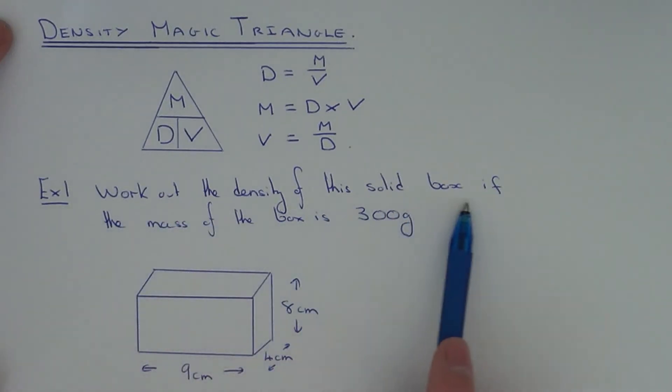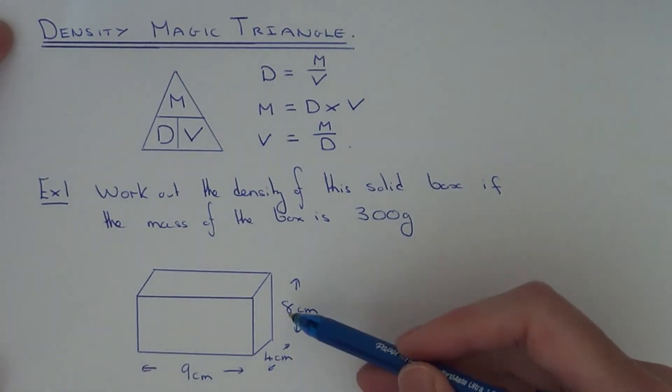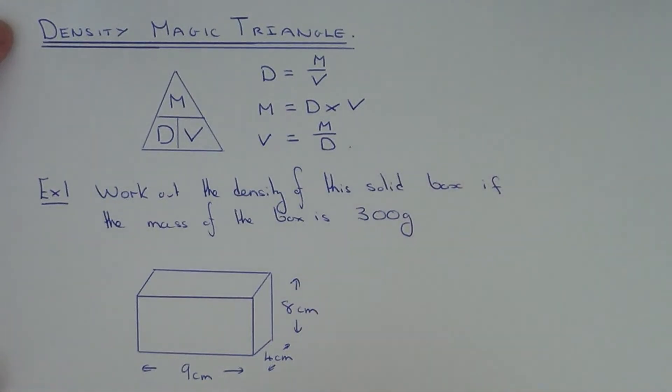We've got to work out the density of this solid box if the mass of the box is 300 grams. The box is 9cm by 4cm by 8cm.